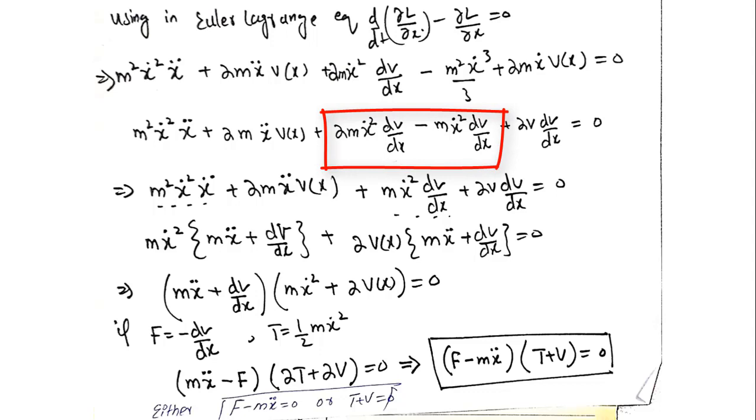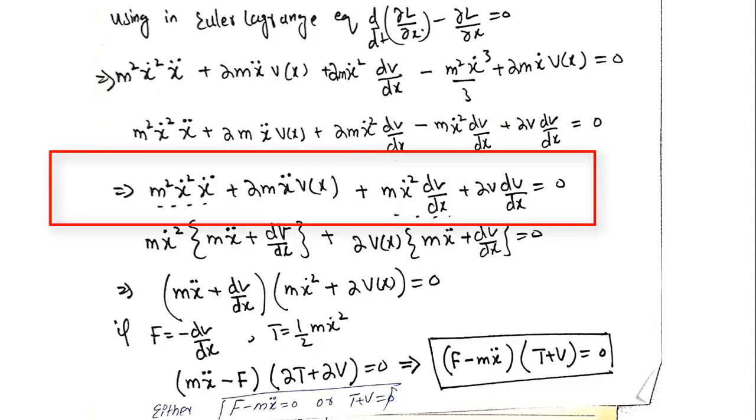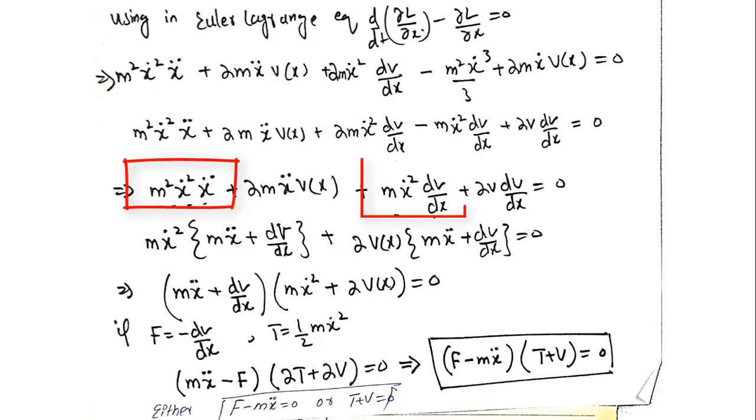Now you can see here these two terms are same, so 2 minus 1 is 1, so I can simplify this. I will get only four terms. In this equation, the first term and the third term have certain parameters that can be taken as common. I can take m x dot square as common and get m x double dot plus dv by dx. From the second and fourth terms I can take 2vx as common, so I can get m x double dot plus dv by dx.